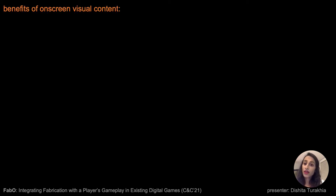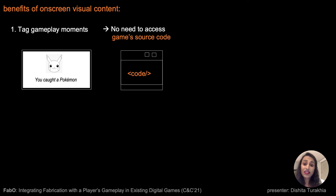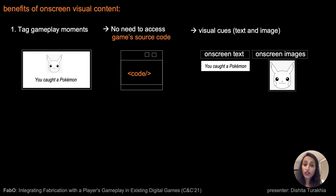There are two main benefits of using on-screen visual content. First, it allows us to tag moments within a player's gameplay without needing access to the game's source code. Instead, it uses visual cues such as text or images that appear on-screen.